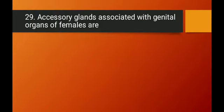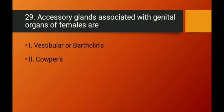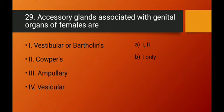Question number twenty-nine: what are the accessory glands associated with the genital organs of females? The vestibular (Bartholin's) glands are found in the female reproductive tract. Cowper's gland is found in males, not females. Among the options, vestibular/Bartholin's glands (option 1 only) is the correct answer. Option B is the right answer.